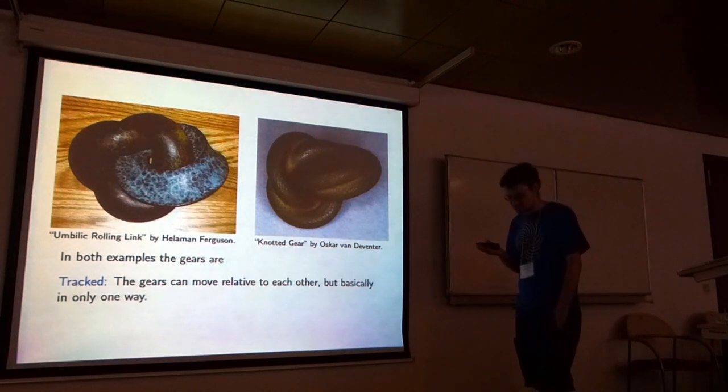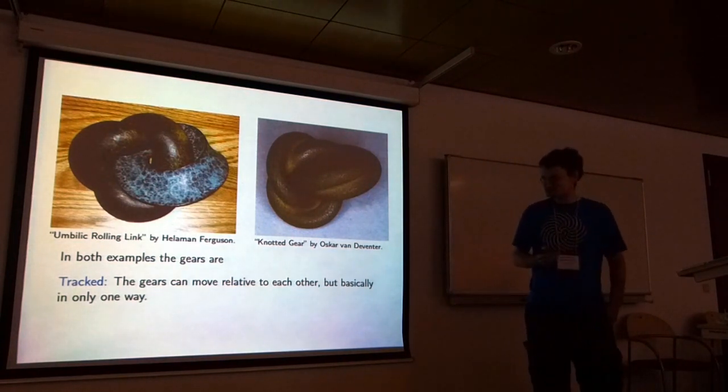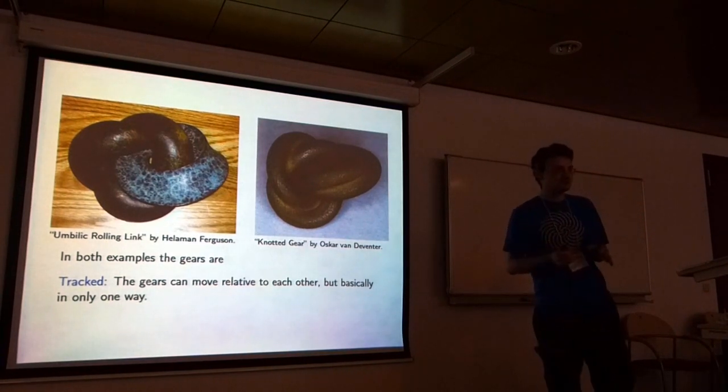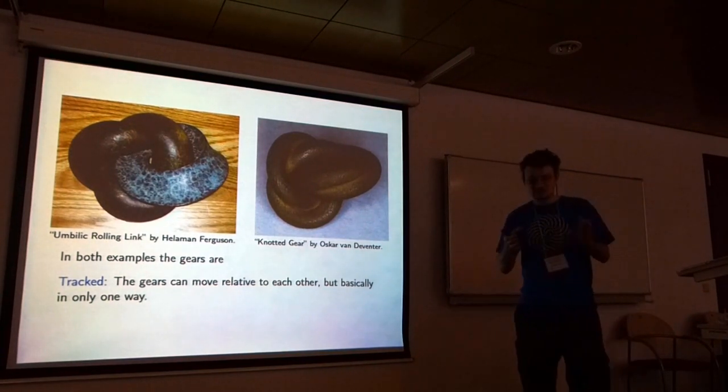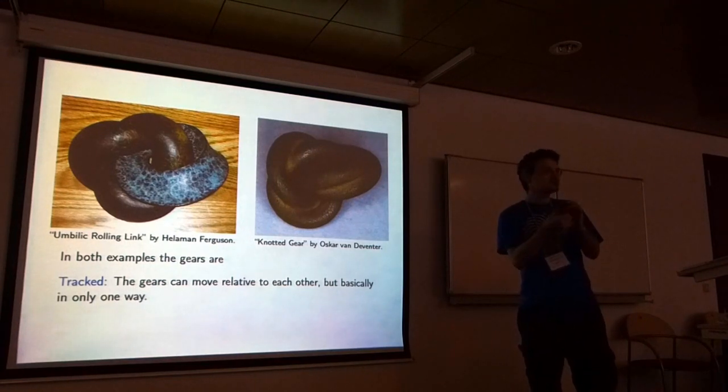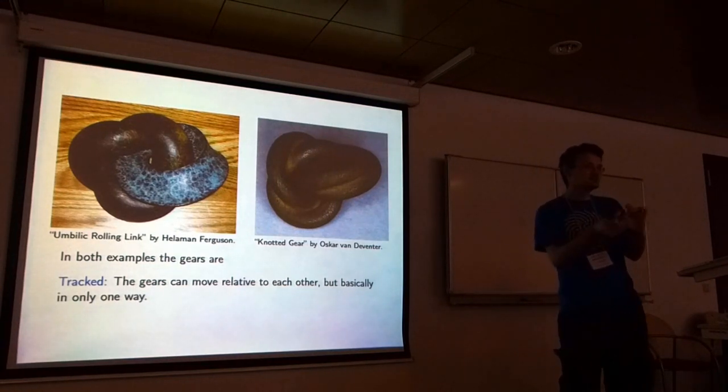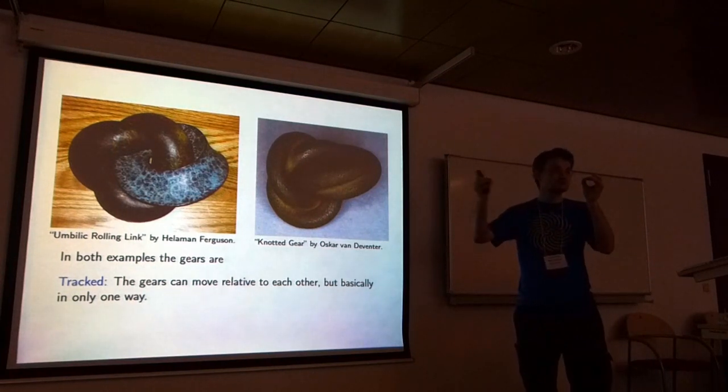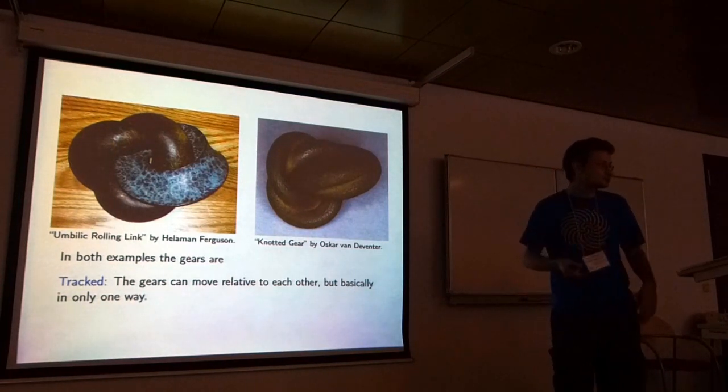So the first axiom that we took is that the mechanism that we built should be tracked. What do we mean by this? It basically means you've got a bunch of gears, and they can move relative to each other. It's not just frozen in place, but there's really only one way you can do this. There's only one way in which all the pieces can move.